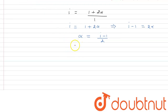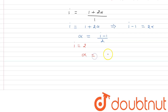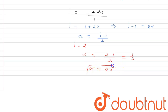The van't Hoff factor for the MX₂ solution is 2. Substituting into α = (i − 1) / 2, we get α = (2 − 1) / 2 = 1/2, which equals 0.5. So the degree of dissociation for this solution is 0.5.